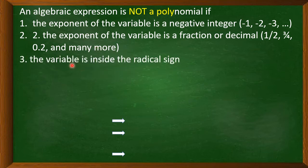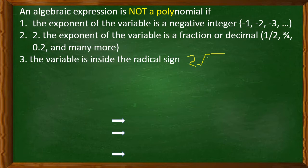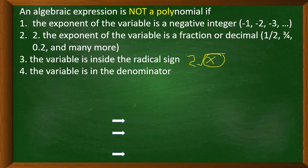Third condition: the expression is not a polynomial if the variable is inside the radical sign. Fourth, the variable is in the denominator. For example, 3 over y is not a polynomial because the denominator has a variable.